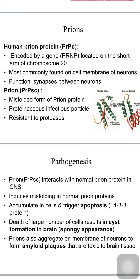There is a normal prion protein designated as PrPC (C for cellular) found on the cell membrane of neurons. This human prion protein is encoded by the prion protein gene known as PRNP, located on the short arm of chromosome 20, and its function involves synapses between neurons. When misfolded, it forms an infectious prion designated as PrPSc (SC for scrapie, the first prion disease of sheep).